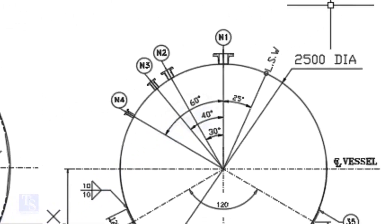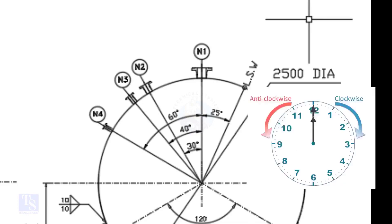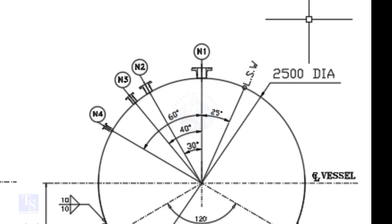Look at the nozzle orientation. The nozzle orientation is in anti-clockwise direction. We are going to mark the centers of nozzles N1, N2, N3, and N4. N1 nozzle comes on 0 degree, N2 on 30 degree, N3 on 40 degree, and N4 on 60 degree.